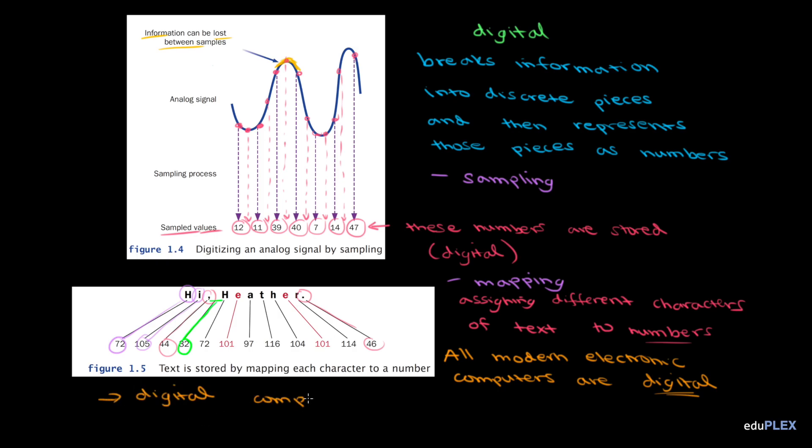So, a digital computer stores information as numbers, but they're not stored as the decimal values you're used to, they're stored in binary, which we learned last time was the base 2 number system. And again, the reason a digital computer uses binary is because electric current has two states, on or off. So, those numbers that we looked at before, like in our audio sampling and our character mapping, they'd be stored as these numbers in binary, not decimal.